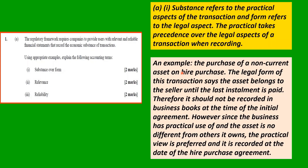An example: the purchase of a non-current asset on hire purchase. The legal form of the transaction says the asset belongs to the seller until the last installment is paid, so it should not be recorded in the business books at the time of the initial agreement. However, since the business has practical use of the asset, the practical view is preferred and it is recorded at the date of the hire purchase agreement.